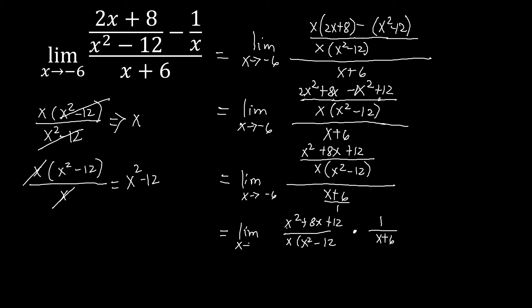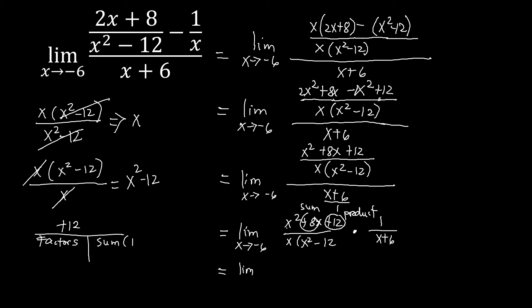As x approaches negative 6. If we look at x squared plus 8x plus 12 as a trinomial, notice that we can still factor something out. We refer to 12 as our product of the factors and 8 as our sum of the factors. The product is positive 12, so the factors have the same sign. The sign of the sum determines whether both positive or negative — the sum is positive 8, so the factors must be positive.